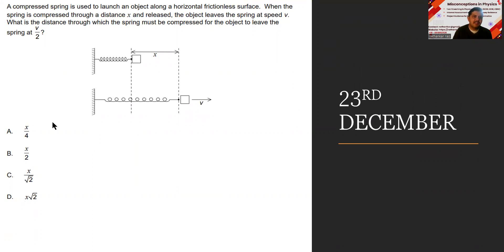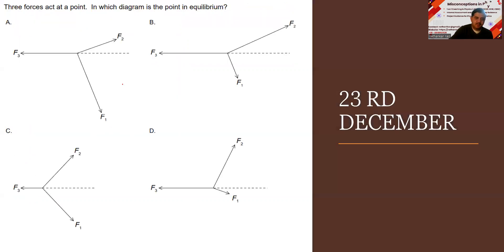A compressed spring is used to launch an object along a horizontal frictionless surface. Now you have a compressed spring, you have an object here. You push it here, and as a result the compressed spring is present. When the spring is compressed to a distance x and released, the object will now start moving. It leaves at a speed v the moment the spring becomes into a mean position or relaxed position. What is the distance to which the spring must be compressed so that the object will leave the spring at v by 2 velocity? Should you compress it to a larger extent, lesser extent? Now let us move on to the next one.